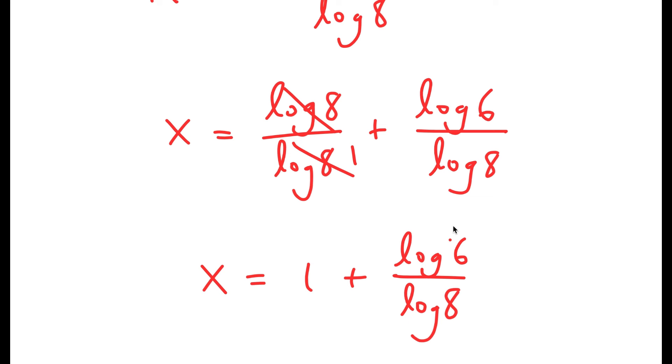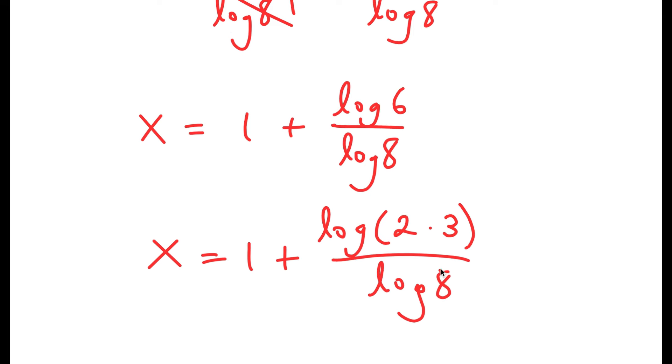Now I'm going to rewrite these two again to simplify this even more. So log 6 I can rewrite as log of 2 times 3. So now using the property again, this turns into log 2 plus log 3. Now I have this over log 8.